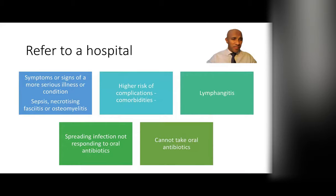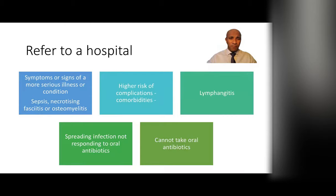Tell patients that full resolution will take time and just because they've finished the course of antibiotics does not mean it hasn't settled. If at the time of seeing you they have any features indicating an existing complication — such as symptoms or signs of sepsis, necrotizing fasciitis, osteomyelitis — or a high risk of complications due to comorbidities like poorly controlled diabetes, ischemia, peripheral vascular disease, or chronic lymphedema — or if they have lymphangitis or cannot take oral antibiotics — they need to come to hospital.